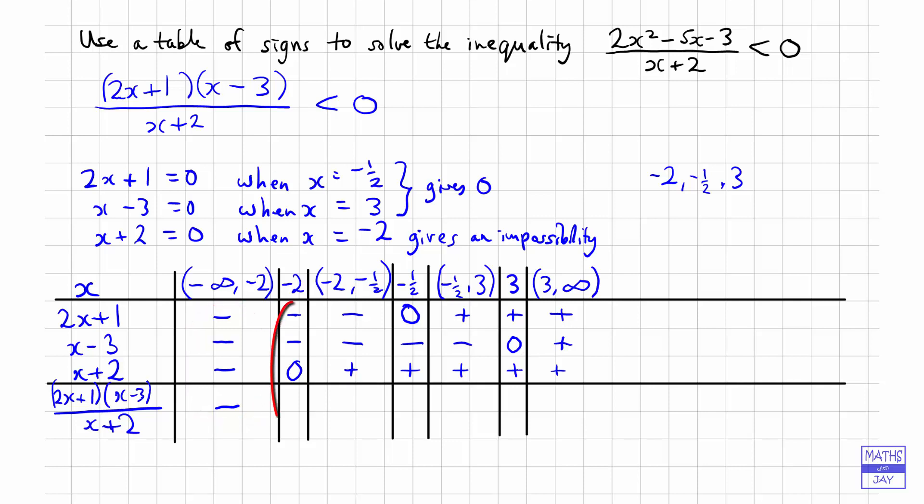Now, the next one, remember we said that when x is minus 2, that's absolutely impossible because we can't divide by 0. So let's just put a big cross in that column there. Can't divide by 0. And then the next one, we're multiplying two negatives together and then we're dividing by positive. So the negatives cancel each other out and that leaves us with a plus.